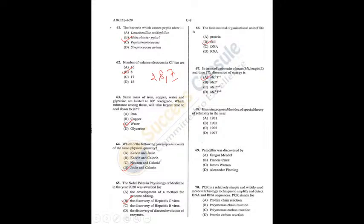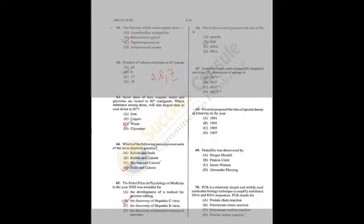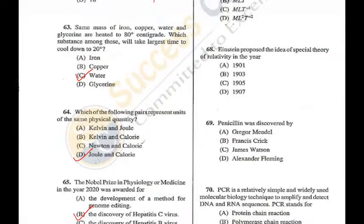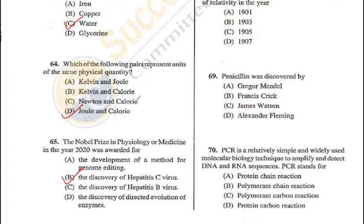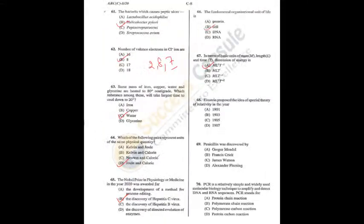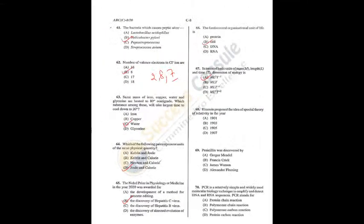Question 68: Einstein proposed the idea of the special theory of relativity in the year 1905 — C is the correct answer. Question 69: Penicillin was discovered by Alexander Fleming — D is the correct answer. Question 70: PCR stands for Polymerase Chain Reaction — B is the answer. Q68 = C, Q69 = D, Q70 = B.